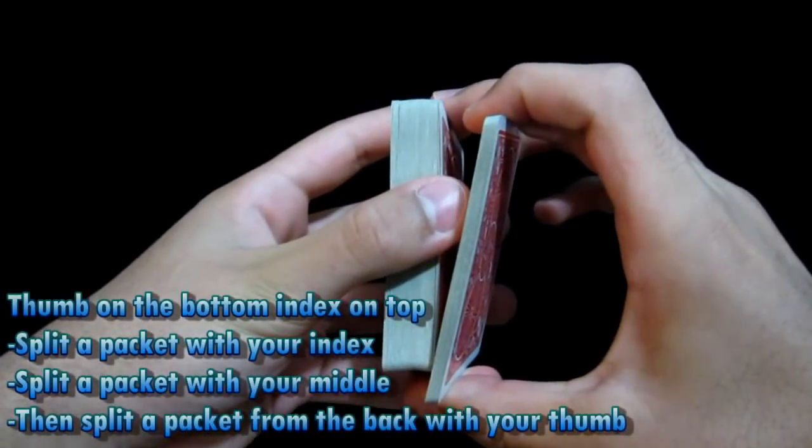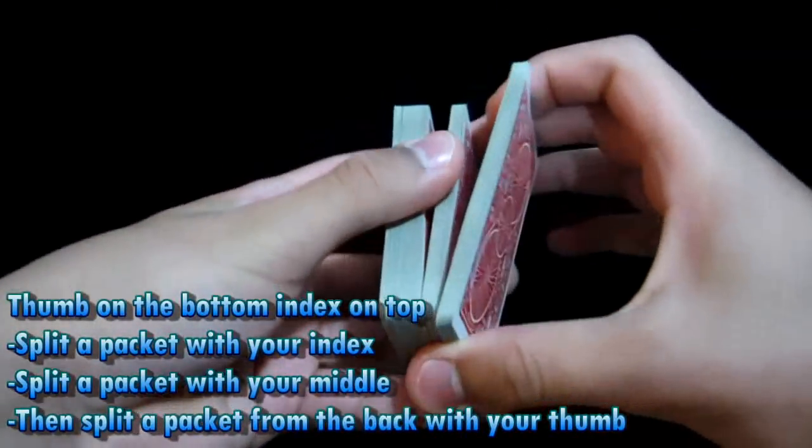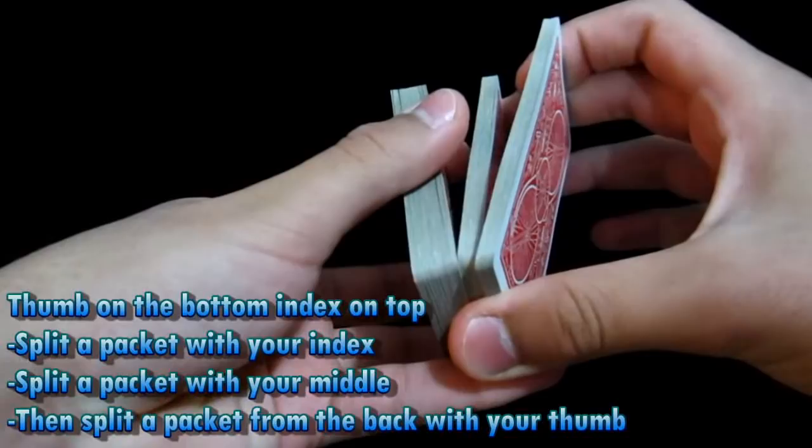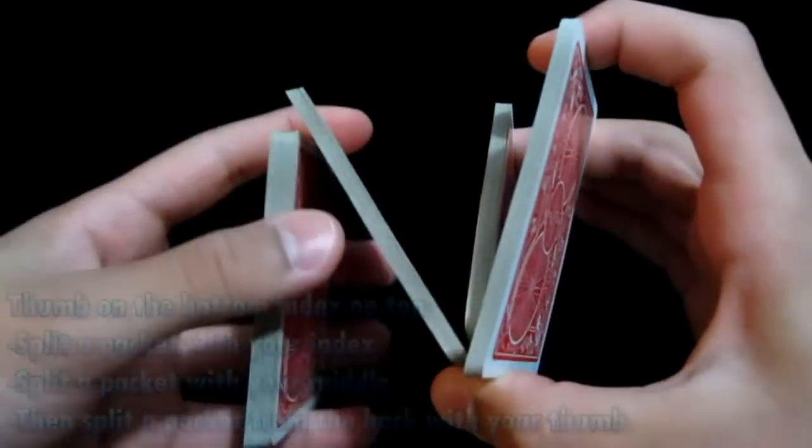You're going to split a packet for about 10 or 15 cards with your index. Now do the same with your other hand, with the next finger, which is the middle, just like that. Go ahead and split another packet. And now from the back here, split a packet using your thumb.